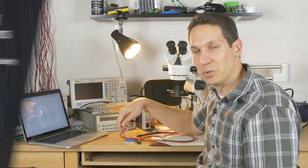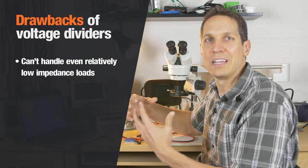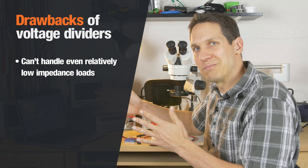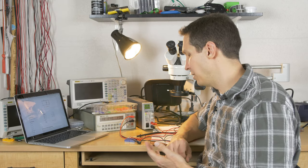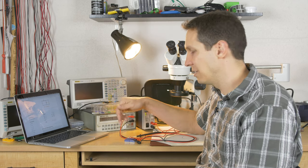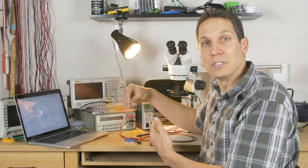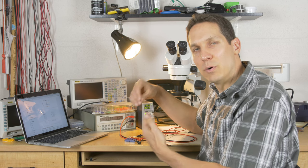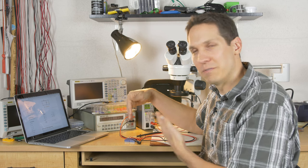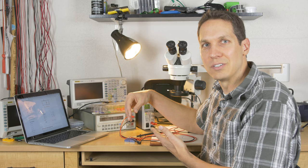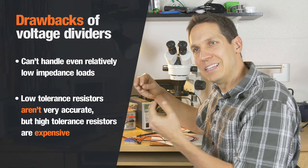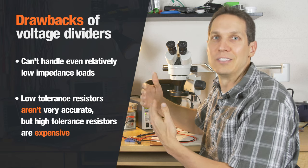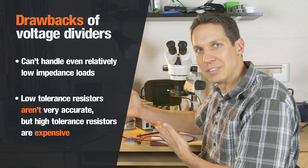The biggest problem with the voltage divider is it just can't handle even these relatively low impedance loads. Another problem is, as we even went over it, the measured voltage was not exactly what we were expecting. That's because these are 5% tolerance resistors. If you need an exact voltage, then you need to have the higher tolerance and therefore the more expensive resistors.